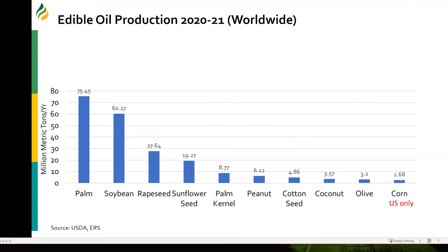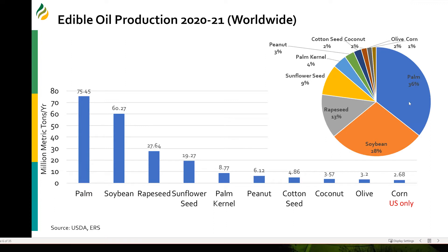If you look at overall edible oil production worldwide, we produce close to about 210 million metric tons of oil every year. The biggest share comes from palm oil — there are two kinds, one from the fruit and one from the kernel. Followed by palm is soybean oil, rapeseed, sunflower, and then other types. Corn oil production here is only for the U.S., while everything else shown is worldwide.